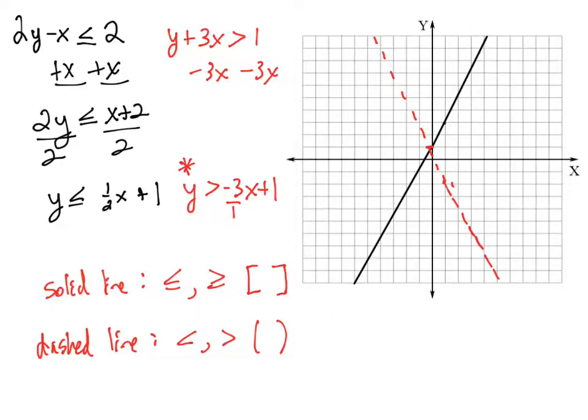So from this point, what we want to do is we want to figure out which region of the graph is shaded. Now there's kind of four different regions that we have here. The graph is kind of cutting the x-y plane into four separate zones.